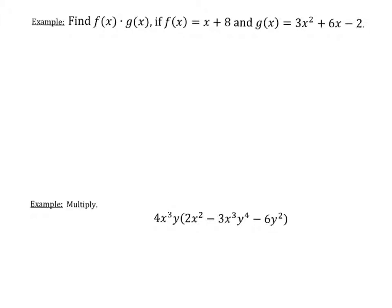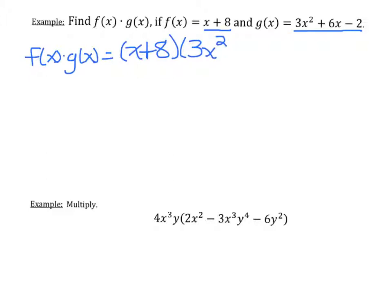One last thing about the FOIL method: it only works for multiplying two binomials. In this next example, the FOIL method won't work because it requires more multiplication. The problem says find f of x times g of x — don't let the function notation scare you, you're doing the exact same thing. We're told f of x is x plus 8 and g of x is 3x squared plus 6x minus 2.